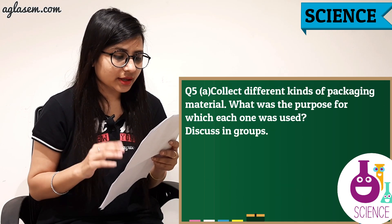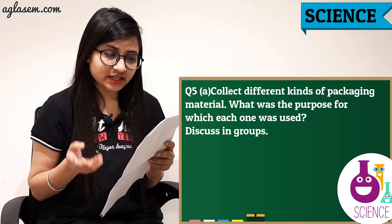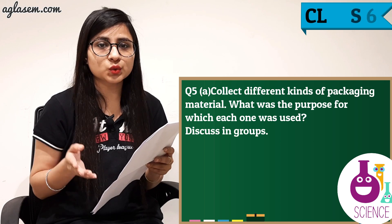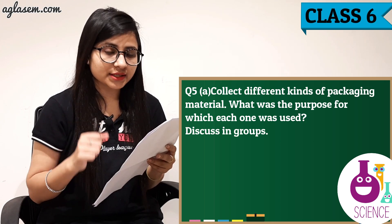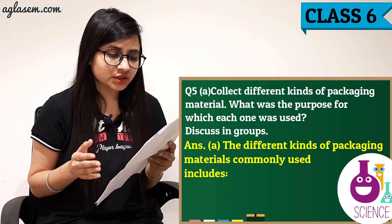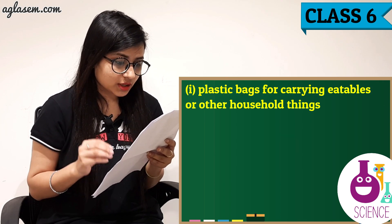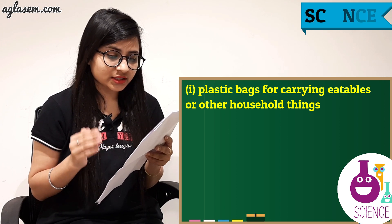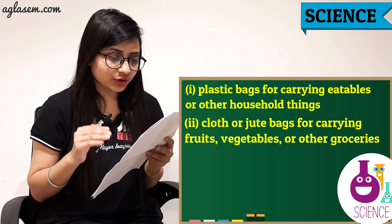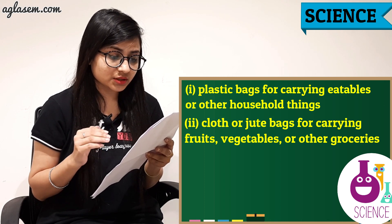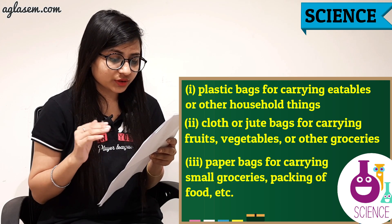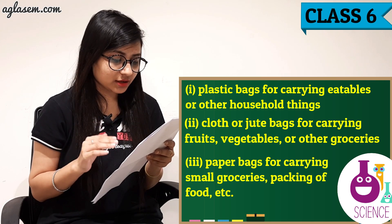Question number 5a: Collect different kinds of packaging material. What was the purpose for which each one was used? Discuss in groups. The answer is: the different kinds of packaging materials commonly used include: 1. Plastic bags for carrying eatables or other household things. 2. Cloth or jute bags for carrying fruits, vegetables, or other groceries. 3. Paper bags for carrying small groceries and packing of food, etc.